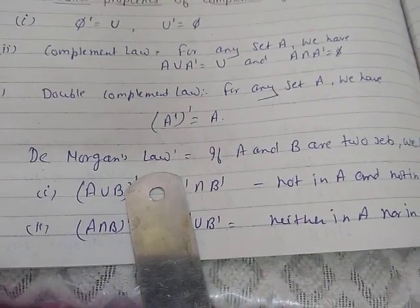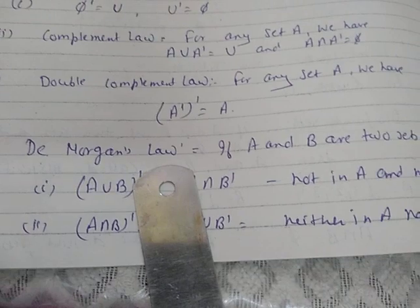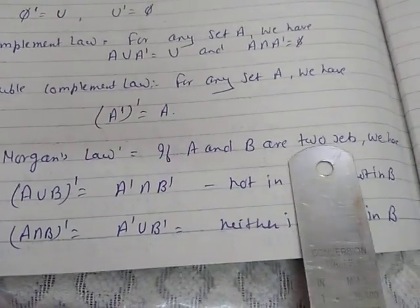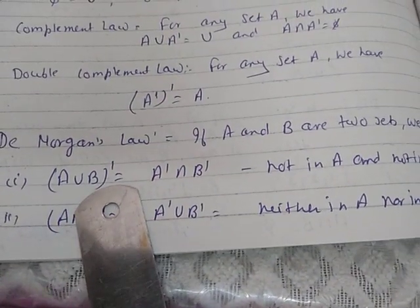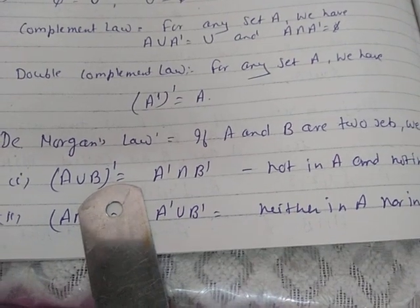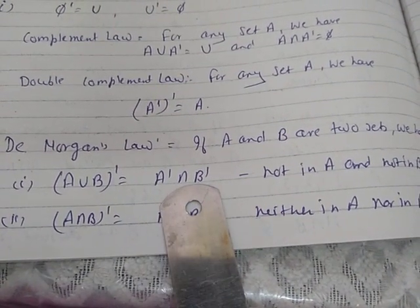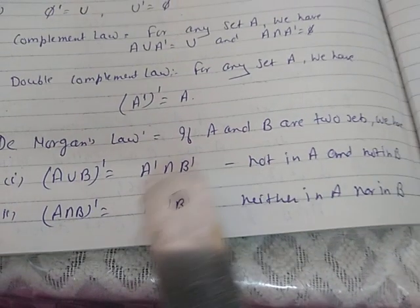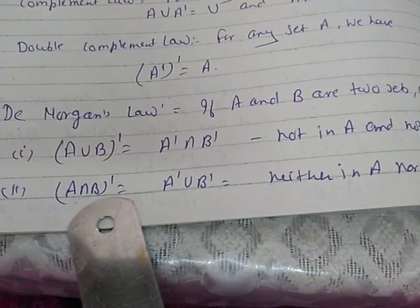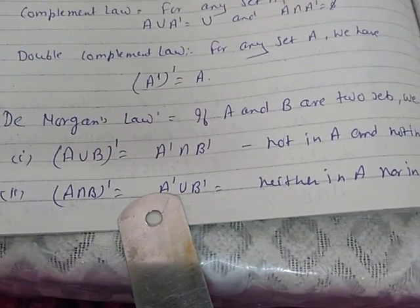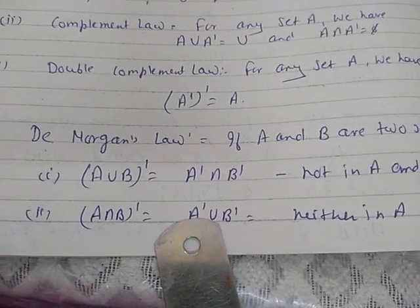Property of complement — De Morgan's law: If A and B are two sets, then A union B complement equals A complement intersection B complement. And A intersection B complement equals A complement union B complement.